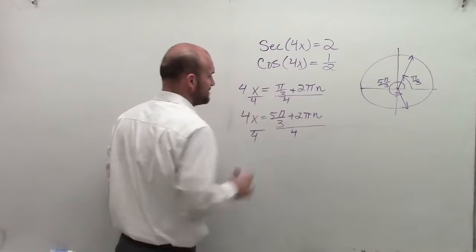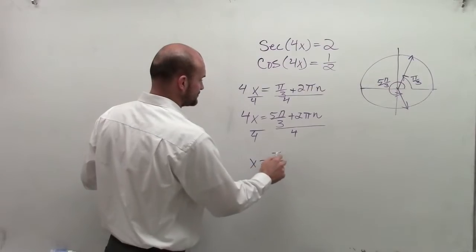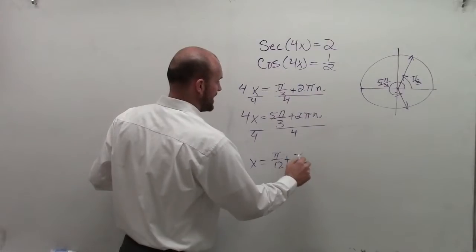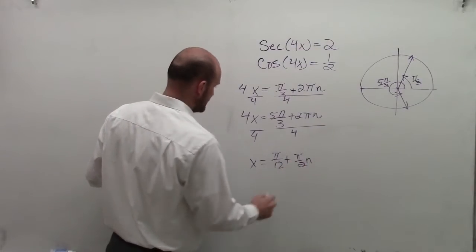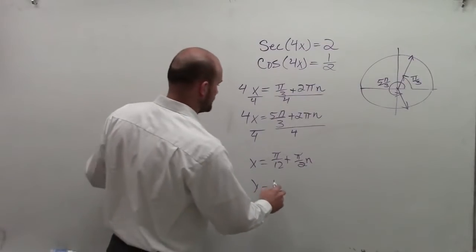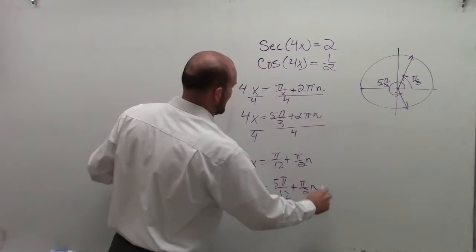I don't know why I did my division sign all the way over. And therefore, I get x equals pi over 12 plus pi halves n. And then I get x equals, let's see, that's going to be 5 pi over 12 plus pi halves n.